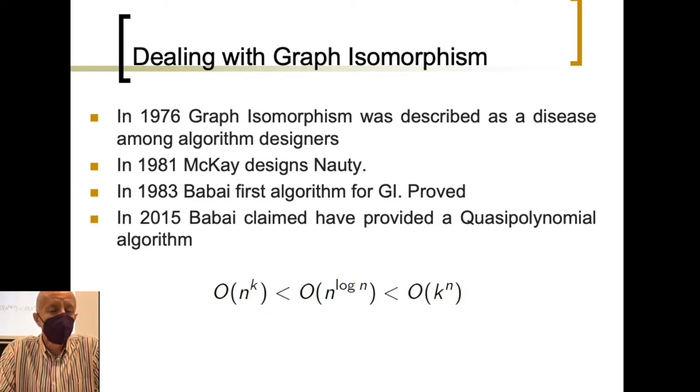Later, 1983, Laszlo Babai proposed his first algorithm for graph isomorphism problem, and also proved that algorithm, in a paper it can be easily found on the literature.